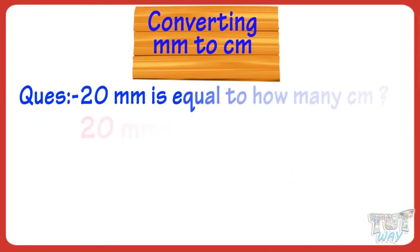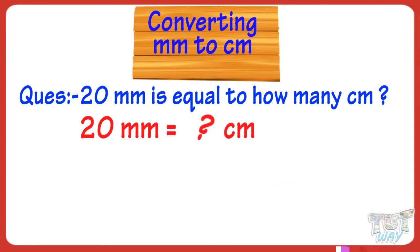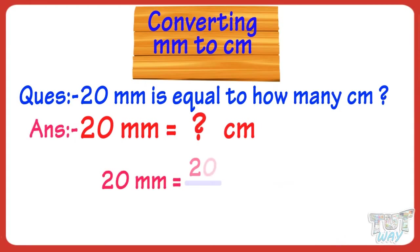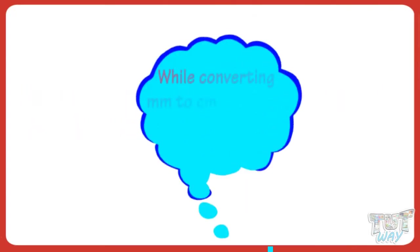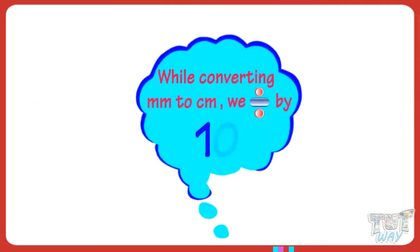20 millimeters is equal to how many centimeters? 20 divided by 10 equals 2. So 20 millimeters equals 2 centimeters. So kids, when we have to convert millimeters back to centimeters, we divide by 10.